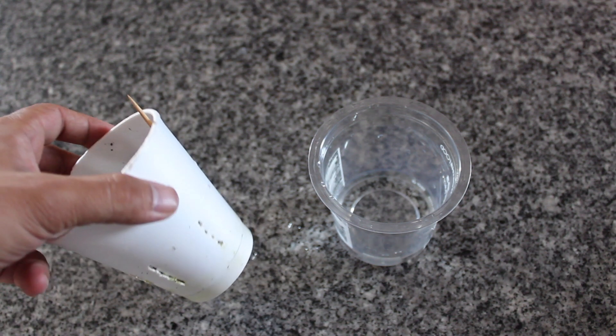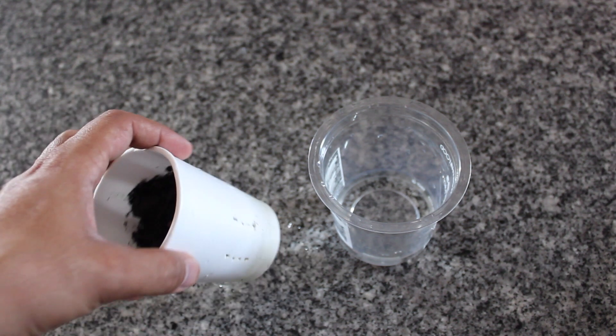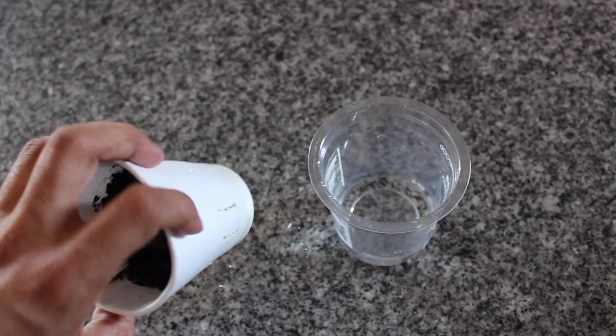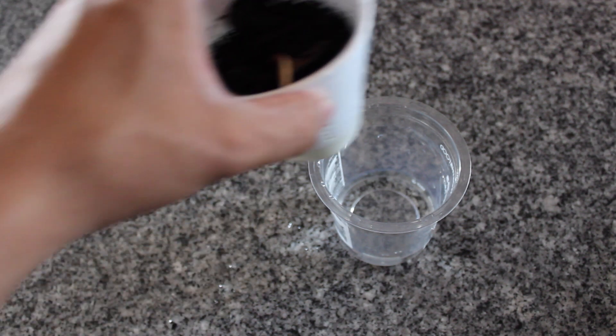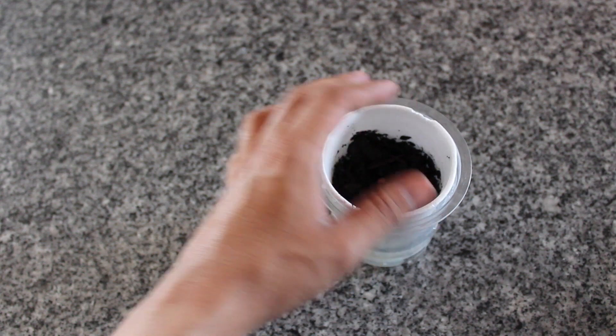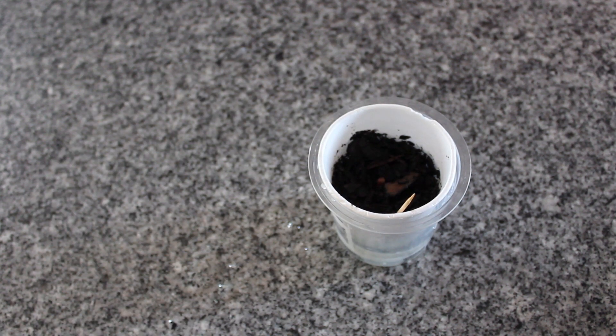As you will notice, the polystyrene cup has holes in it. This is so that when the cup is placed in the container, the water seeps through the holes in the cup, giving the seed enough water to grow.